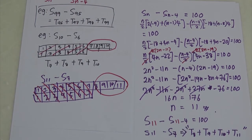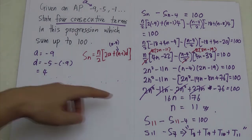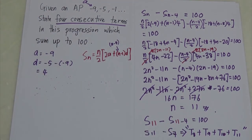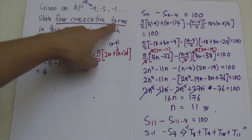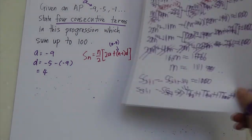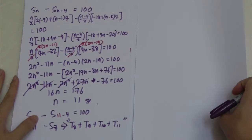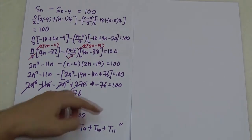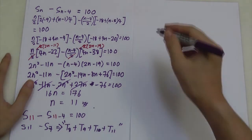Therefore, the 4 consecutive terms are T8, T9, T10, and T11. However, you might doubt the answer, so let's do something extra just to test whether the answer is correct — checking whether when we sum T8 to T11 we actually get 100.